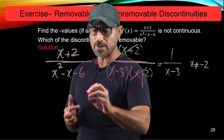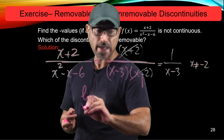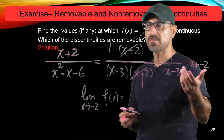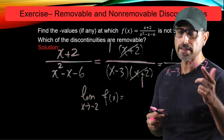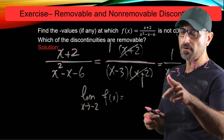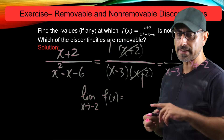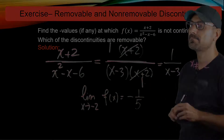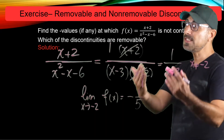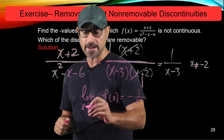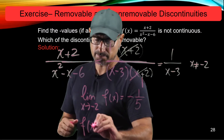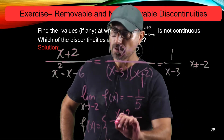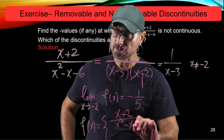Now performing the limit calculation as x approaches negative 2 for f: since we found a simpler version of the function, we plug in negative 2 for x, because the simplified function is defined there. That gives us negative 1 over negative 2 minus 3, which equals negative 1 over 5.